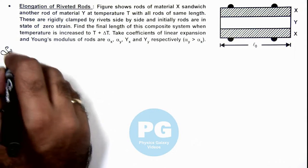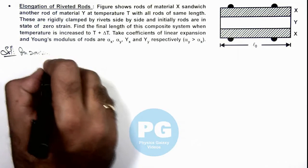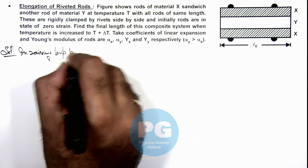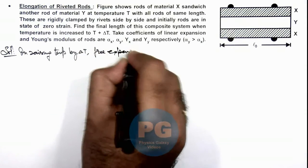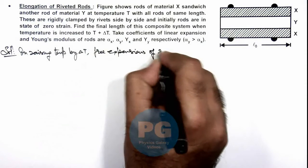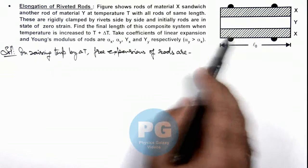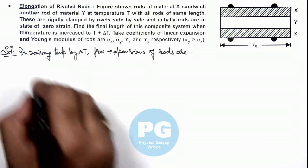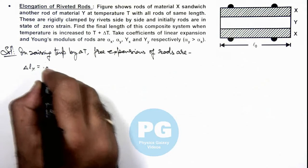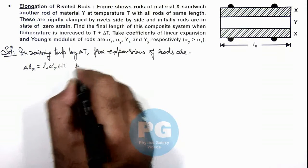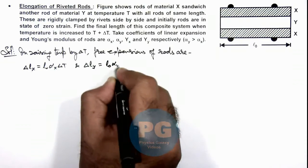On raising temperature by delta T, the free expansions of rods — free expansion means if these were not connected by rivets and are free — then we can write: delta L_x equals L₀ · alpha_x · delta T, and delta L_y equals L₀ · alpha_y · delta T.